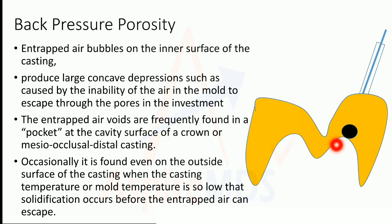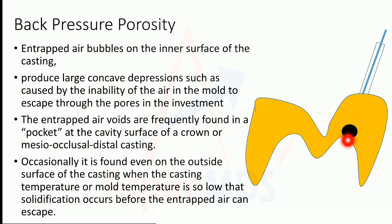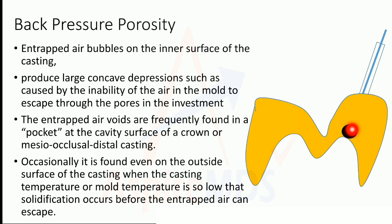Back pressure porosity is more likely when the casting temperature of the mold is so low that solidification occurs before the trapped air can escape. Normally, even if air is present, it passes through the molten metal and exits through the investment. But if the temperature is very low, the metal solidifies as soon as it enters, preventing the trapped air from escaping.